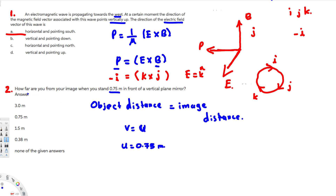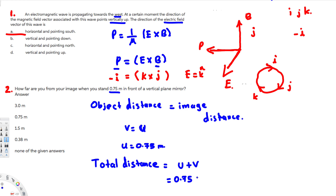They ask how far are you from your image when you stand 0.75 meters in front of the vertical plane mirror. Your distance u is 0.75 meters and the image distance is also 0.75 meters. So the total distance is u plus v, which is 0.75 plus 0.75, giving us 1.5 meters. The answer is 1.5 meters.